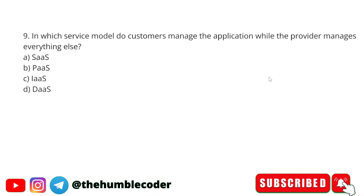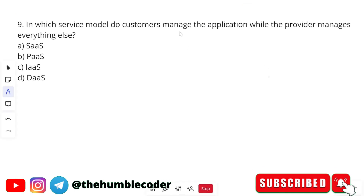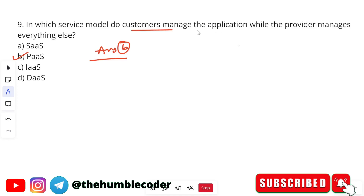In which service model do customers manage the applications while the provider manages everything else? The options are SaaS, PaaS, and IaaS. The correct answer is PaaS — Platform as a Service. In PaaS, the application is managed by the customer while the provider manages everything else.